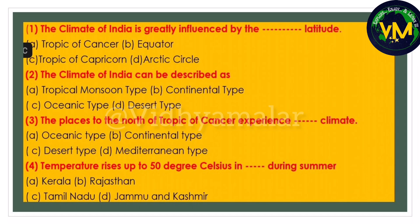The second question is a direct question: the climate of India can be described as Tropical Monsoon type. Third question: the places to the north of Tropic of Cancer experience dash climate. Let's use the elimination method. Option A: Oceanic type - north of Tropic of Cancer, do we have any ocean? No, so it is definitely not oceanic. Option B: Continental type - continental type of climate is found in the interiors of continents, so yes, this may be the answer.